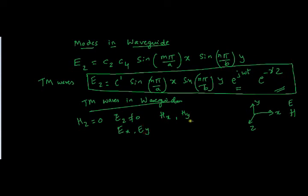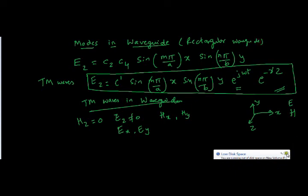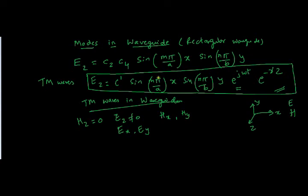For TM waves, Ez is not equal to 0, so Ez exists and so do Ex and Ey. These are all field components which exist in a waveguide. We are dealing with a rectangular waveguide. These fields exist in the waveguide, and you can see there are two terms m and n in the equation for all these fields.